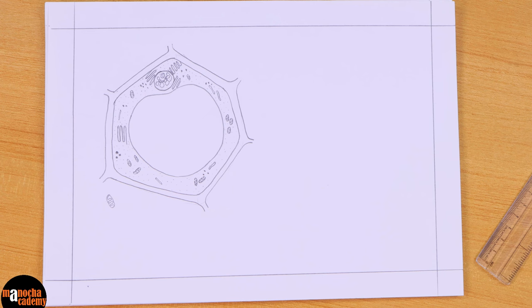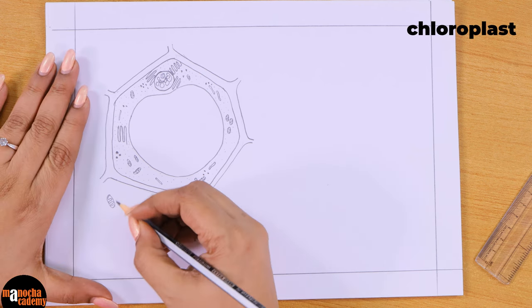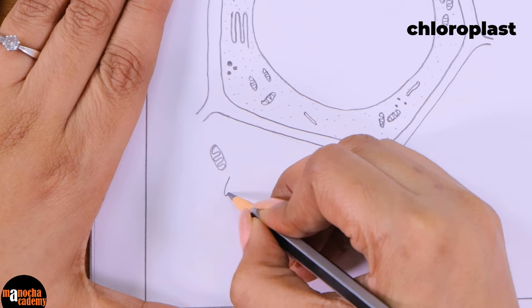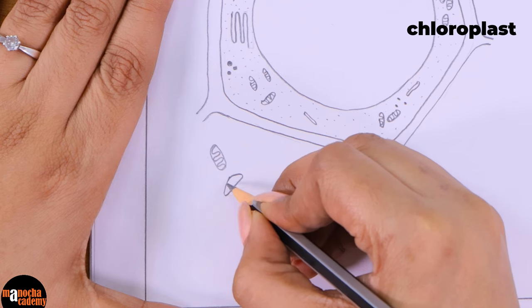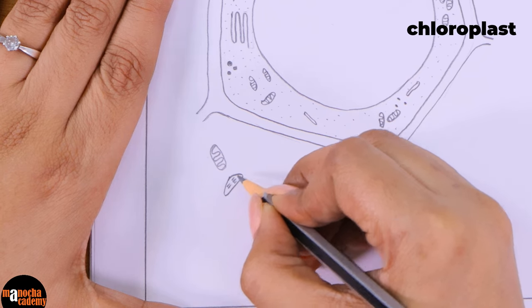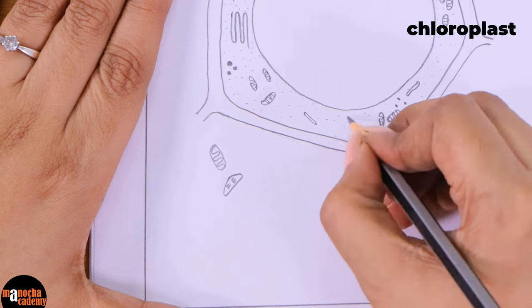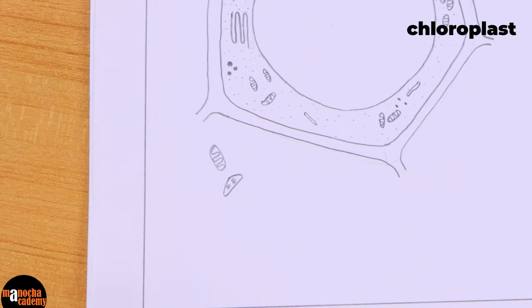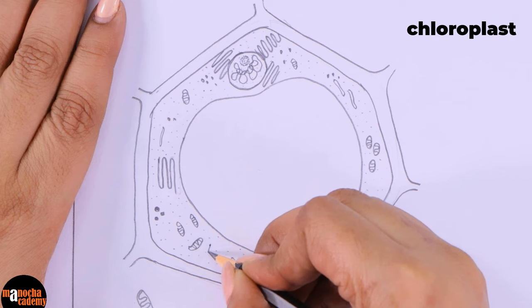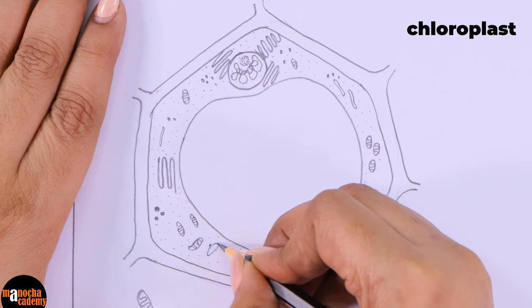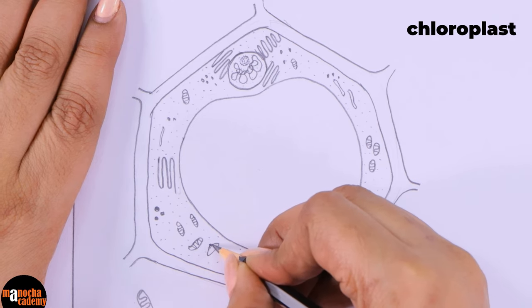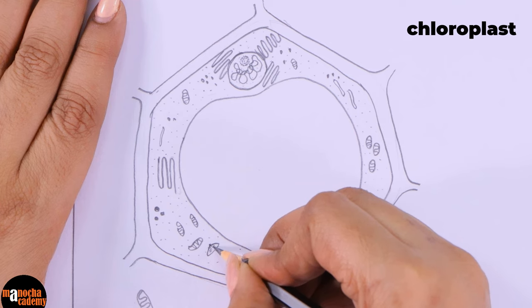And last but not the least, we are going to draw the chloroplast. So how do we draw the chloroplast? We will be drawing this in a miniature form. Since this is a plant cell, we will be drawing quite a few chloroplasts, but keep the size small. It is almost like the mitochondria.